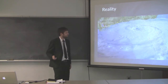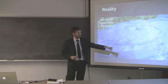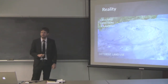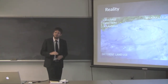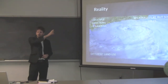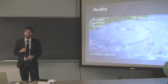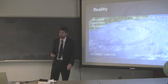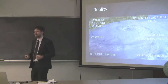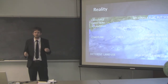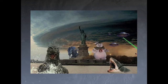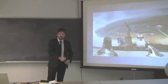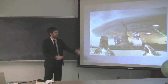Here's the reality for Florida: you have multiple directions of landfall — east, west, the storm could cross the state and hit the other side. Different land use types — urban, forest, swamps. Relatively flat land with some hills in Central Florida and the Panhandle. High population zones mostly along the coast. Two coastlines with two water bodies surrounding the state, plus lakes, intercoastal waters, islands, and a coastline angled more north-northwest to south-southeast rather than directly north-south. There are probably other mesoscale or microscale effects that could affect TC tornadoes.